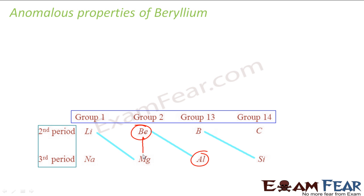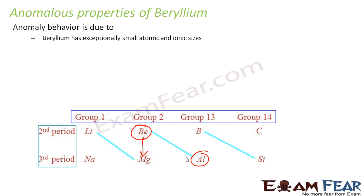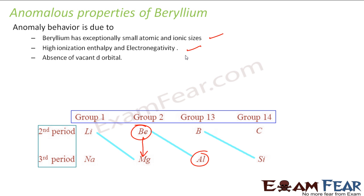Beryllium is expected to have properties similar to magnesium, but actually it has properties similar to aluminium. This is because both have similar size, high ionization enthalpy and electronegativity, and there is no valence d orbital. This is almost similar to what we have done for lithium and magnesium — almost the same pattern.